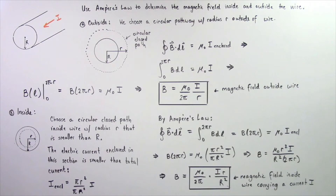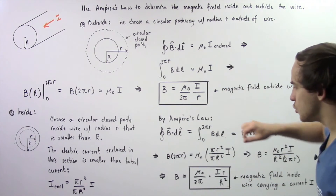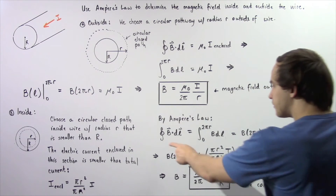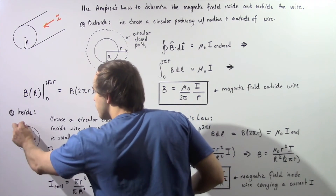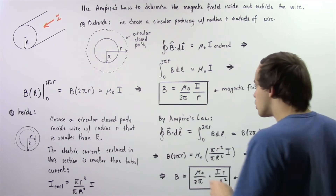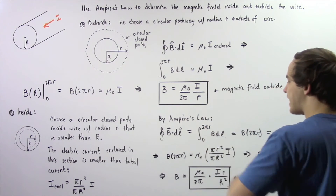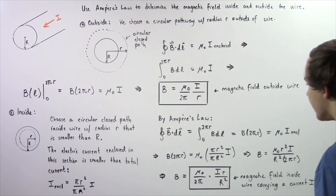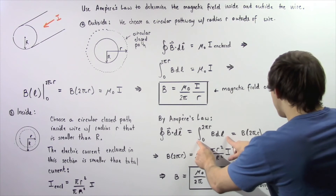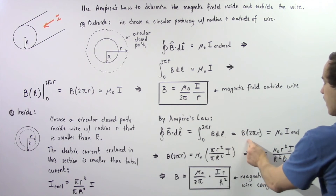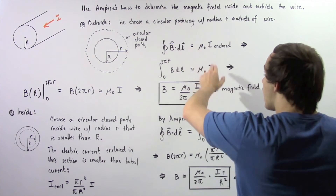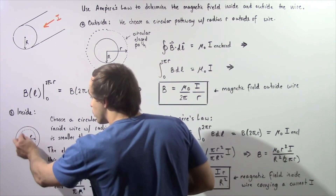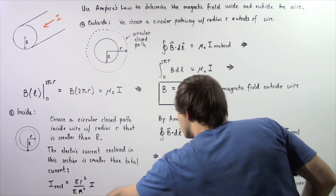Now we are ready to apply Ampere's law. The closed integral of the dot product of B and dL is evaluated from zero to two pi lowercase r. Since the angle is zero, cosine of zero equals one. Evaluating the integral, this becomes B multiplied by two pi r, and by Ampere's law this equals mu-naught multiplied by the enclosed electric current in this region.